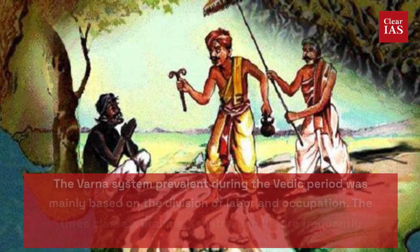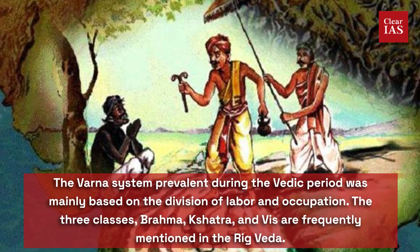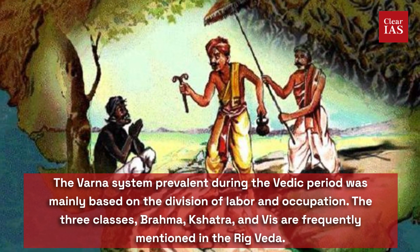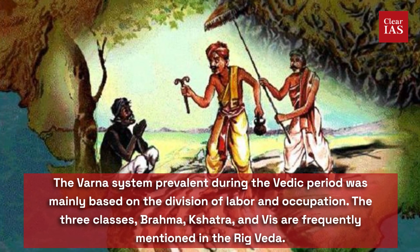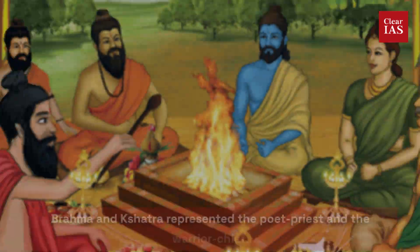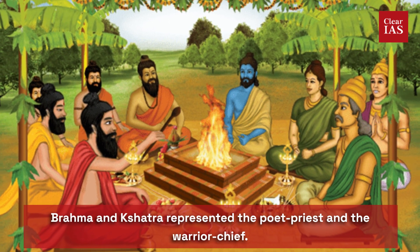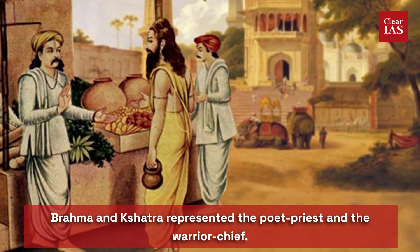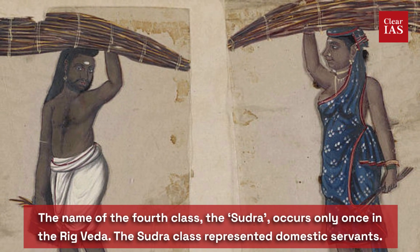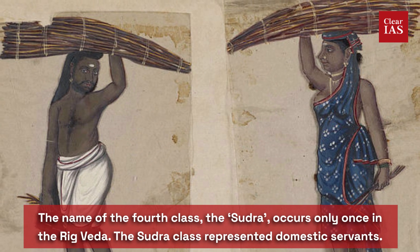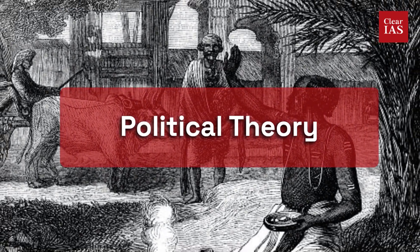The Varna system prevalent during the Vedic period was mainly based on the division of labor and occupation. The three classes — Brahma, Kshatriyas, and Vis — are frequently mentioned in the Rig Veda. Brahma and Kshatriyas represent the poet-priest and warrior chief, while Vis comprises all the common people. The name of the fourth class, the Shudra, occurs only once in the Rig Veda, and the Shudra class represented domestic servants.